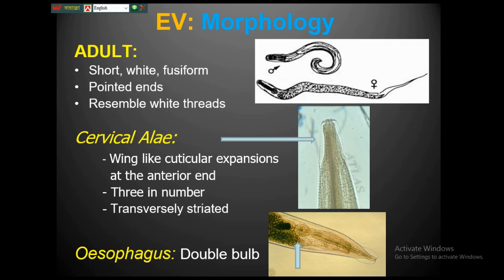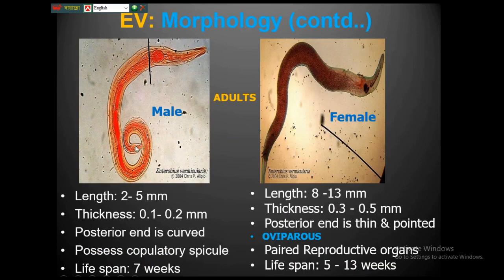The worm also has a double bulb in the esophagus, unlike other helminths. The male is shorter than the female; the male has a curved posterior end and a copulatory spicule, with a short lifespan of about seven weeks. The female has a pointed posterior end and a longer lifespan of up to 13 weeks. This organism is oviparous — the female lays eggs.